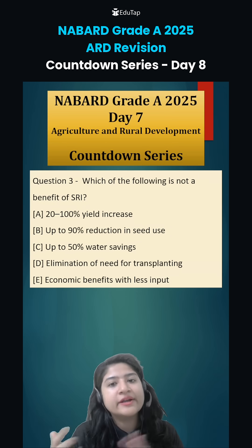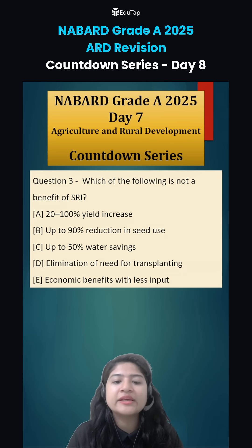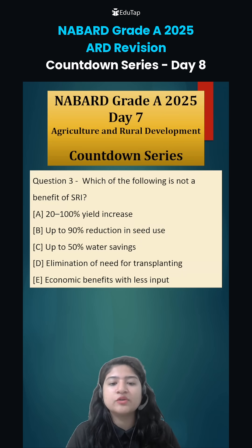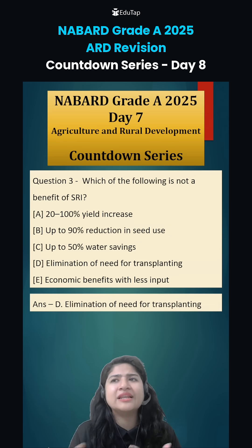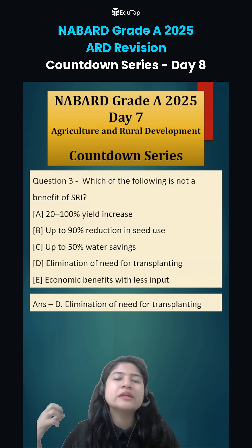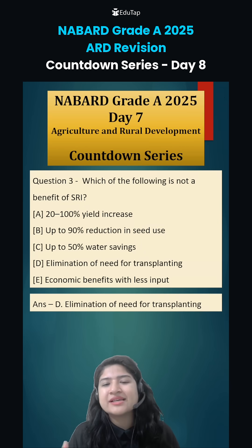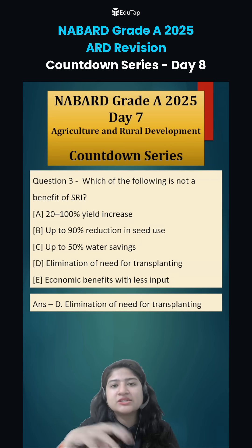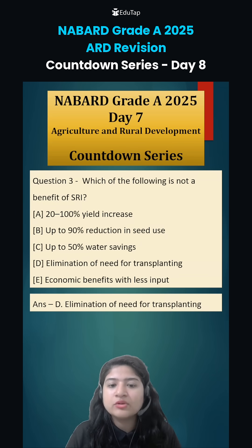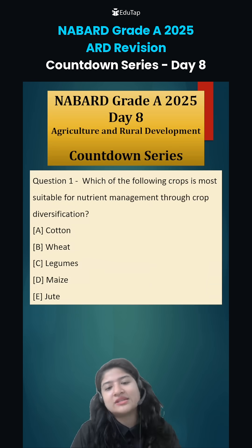In SRI, a 20–100% yield increase is seen, along with a 90% reduction in seed use and 50% water saving. Elimination of transplanting is NOT a benefit of SRI — transplanting is still done, just earlier: around 8–12 days versus the conventional 20–30 days. Also, in the conventional method seedlings are grown in clusters, whereas in SRI individual seedlings are grown — that is why there is a 90% reduction in seed rate. Finally, SRI does provide economic benefit with less input.